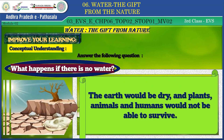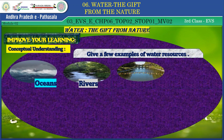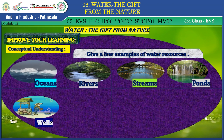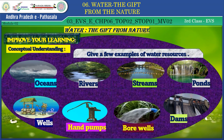Shall we get ready to answer one more question? Recall and answer about types of water sources. Natural sources include oceans, rivers, streams, ponds and lakes. Man-made sources include wells, bore wells, hand pumps, dams and canals, etc.